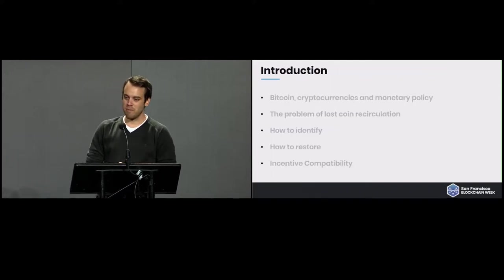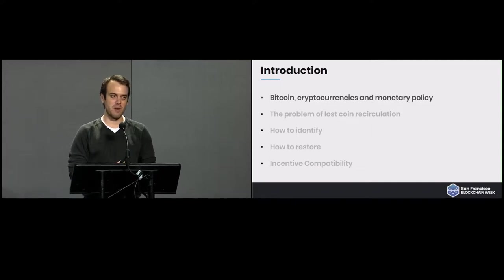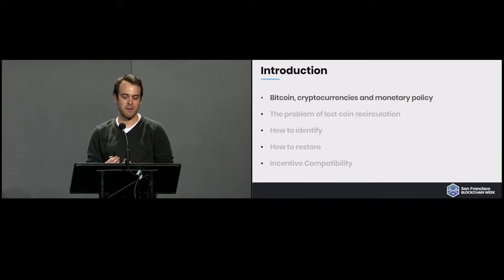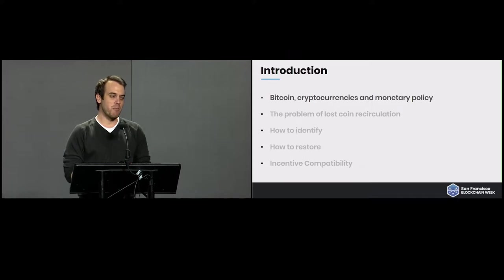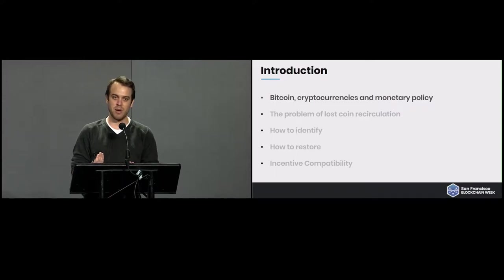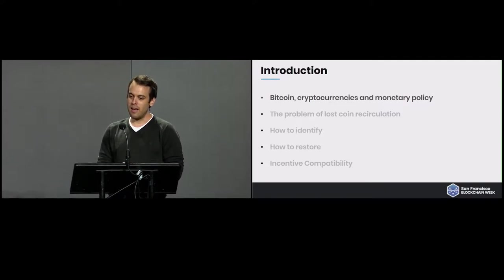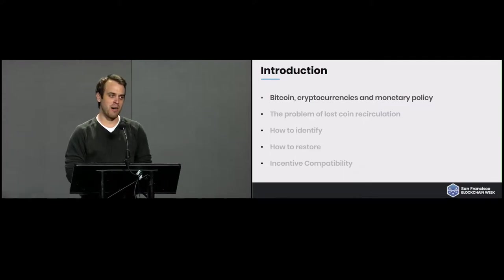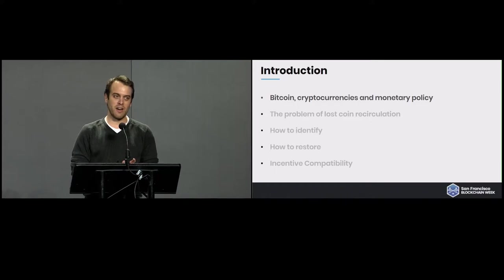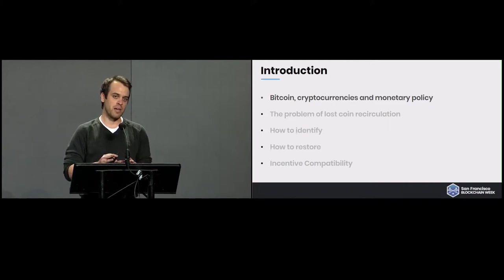A bit of an introduction — first, a word on Bitcoin, cryptocurrencies, and monetary policy. Bitcoin is the first widely accepted decentralized cryptocurrency, and its decentralization means there's no central body governing it. The problem this raises is issues of governance, where sometimes you have to find answers to problems such as monetary policy — how do you stabilize a coin? Specifically with Bitcoin, we've seen how volatile it can become. We chose to focus on recirculating lost cryptocurrencies, and while we model this primarily around Bitcoin, you can transfer these ideas to other cryptocurrencies as well.